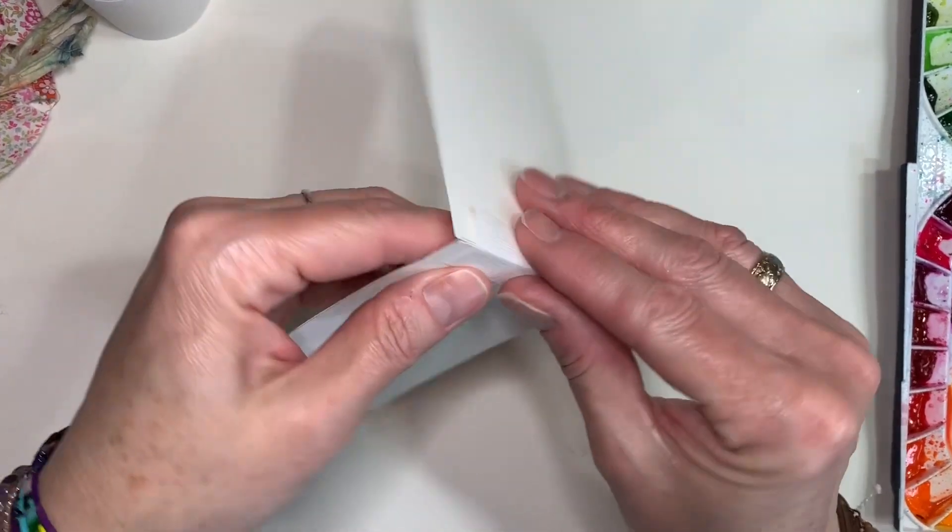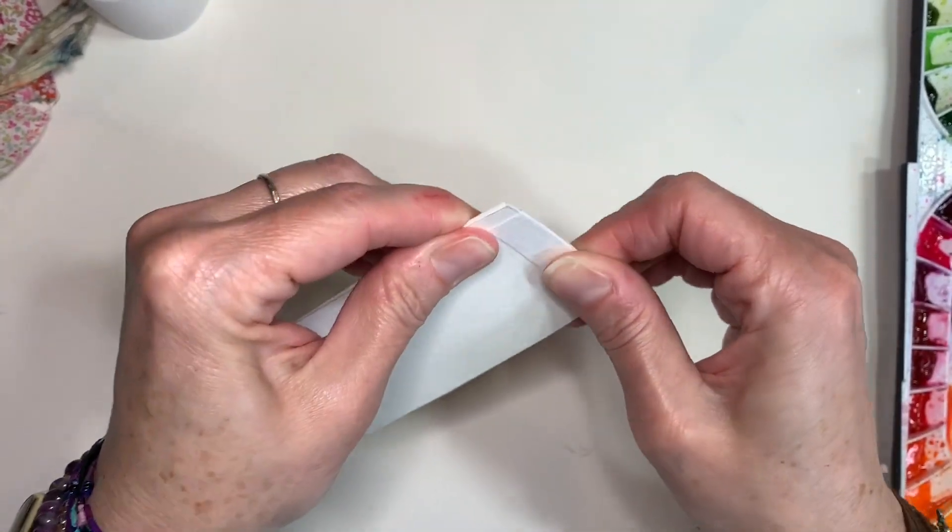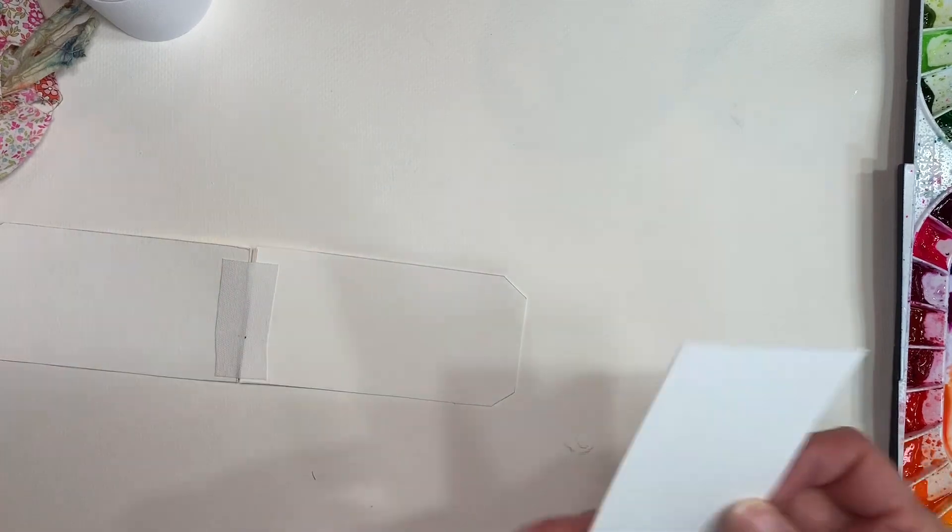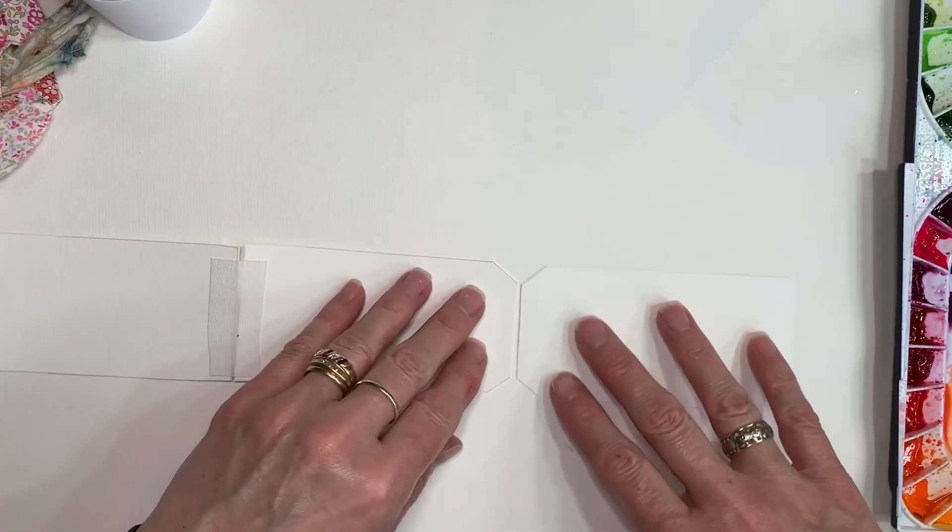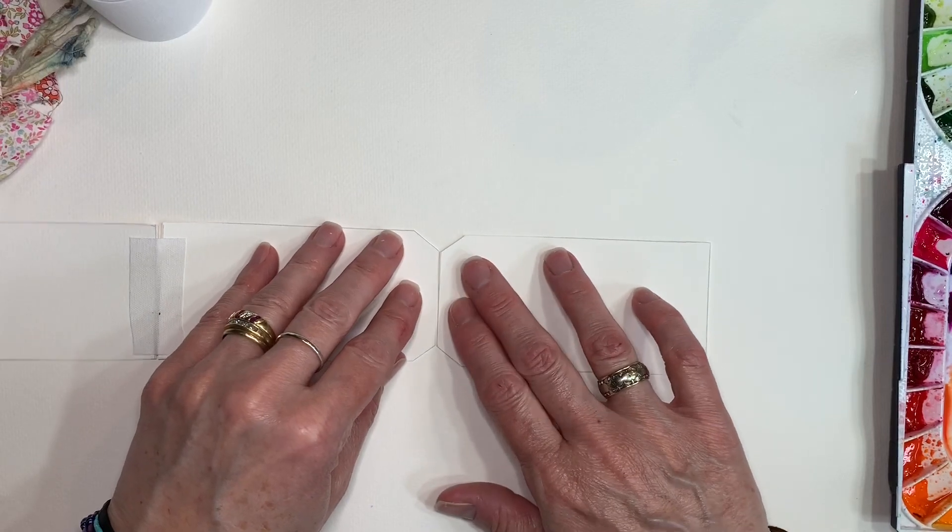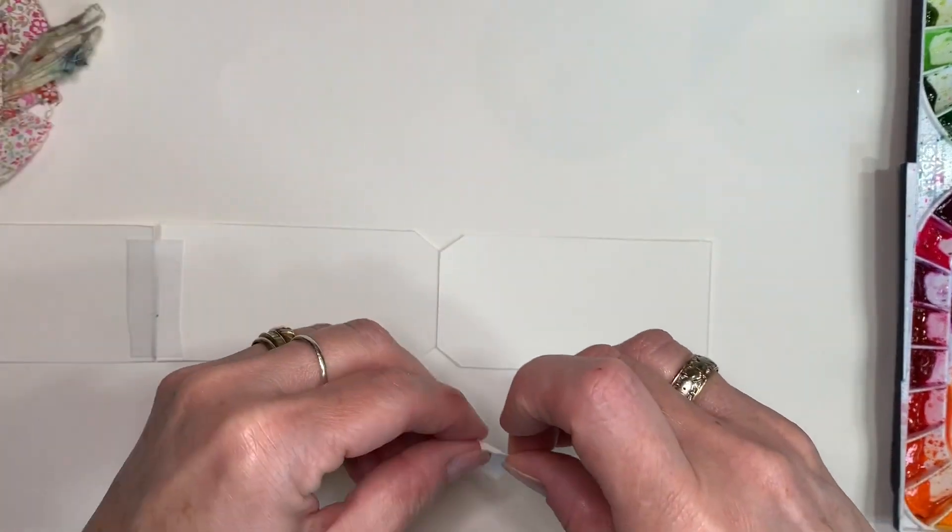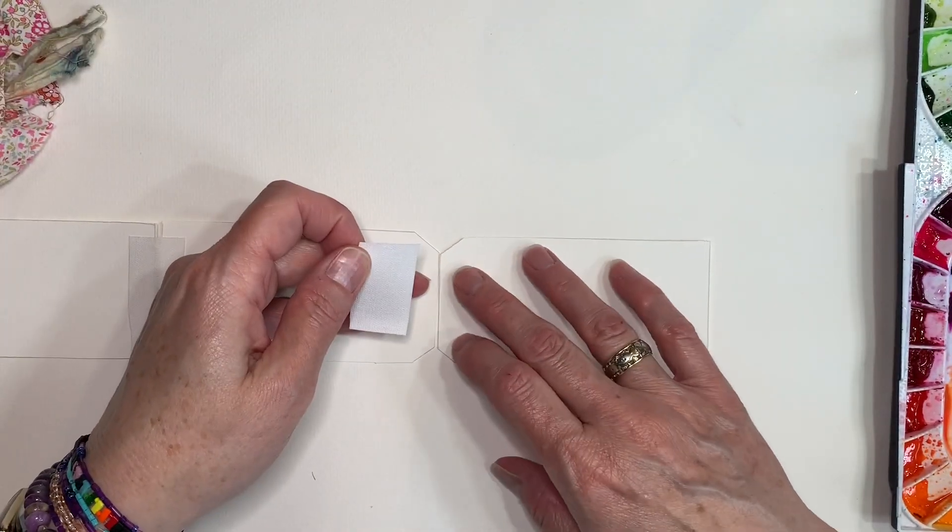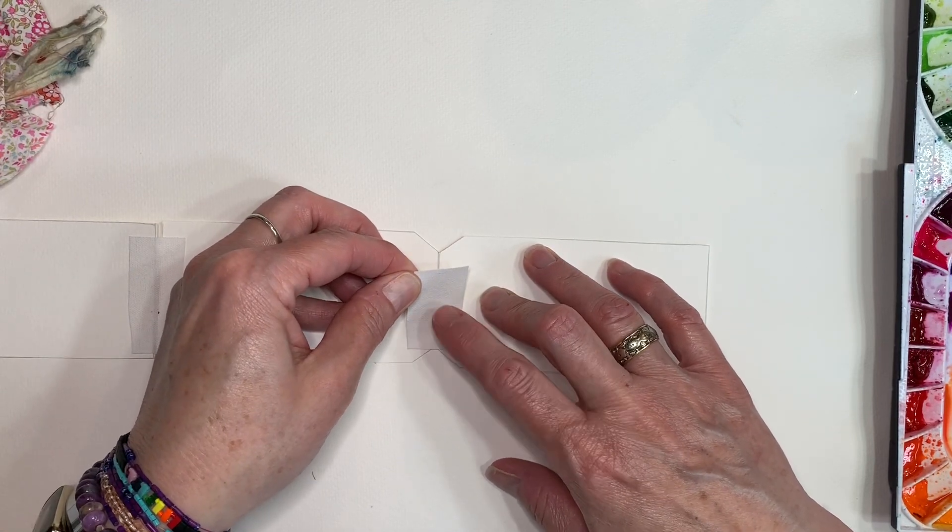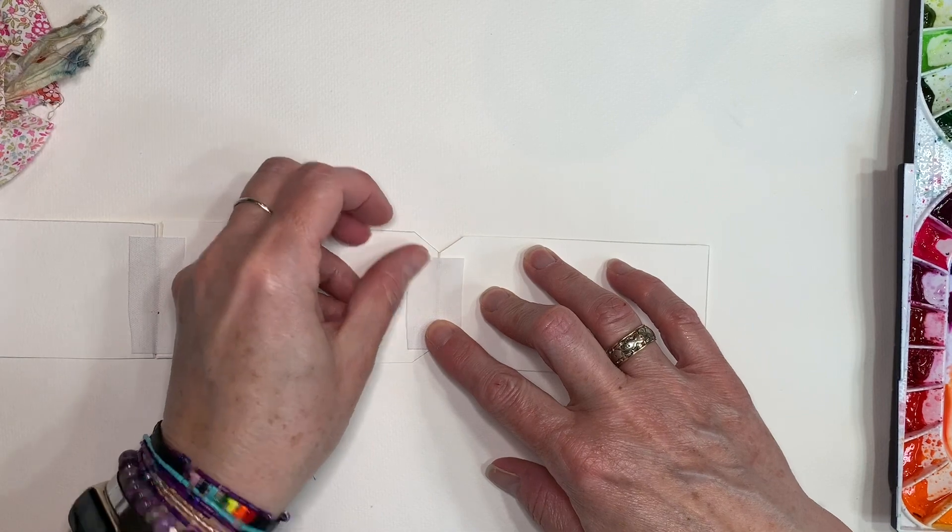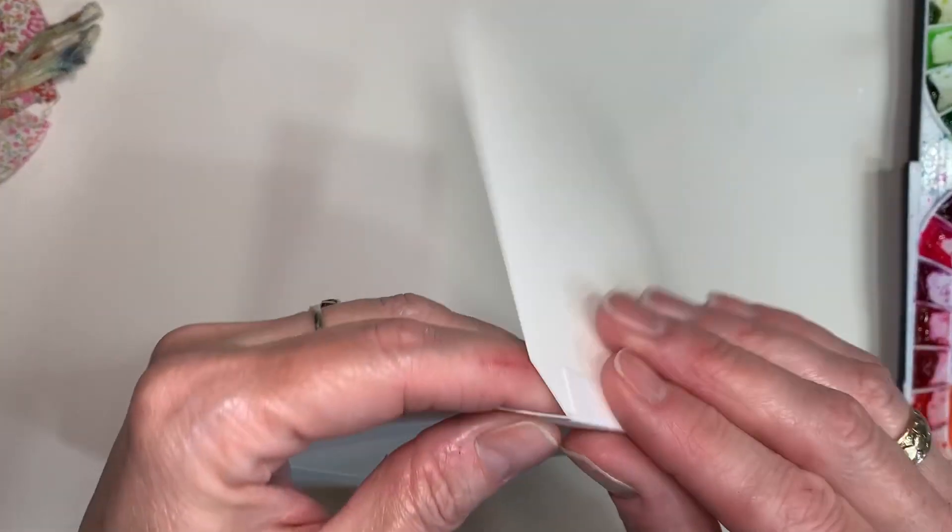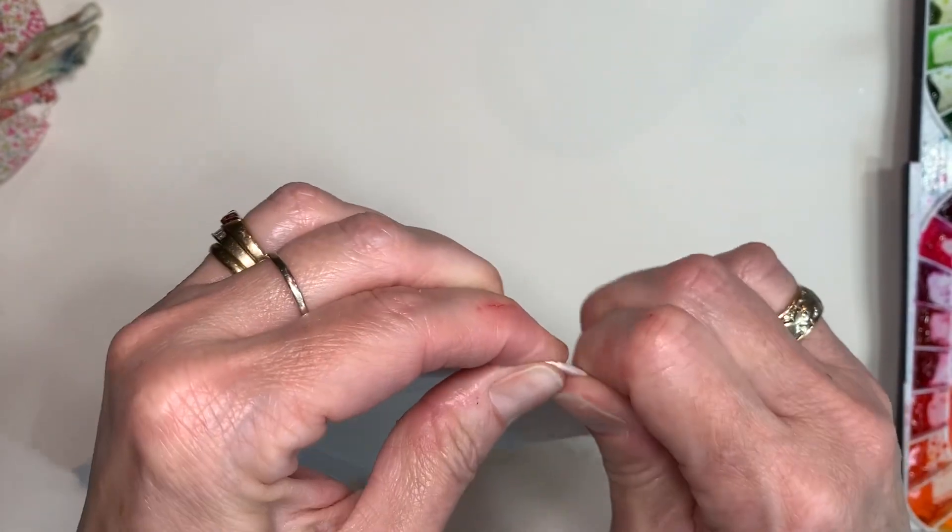So I went long end to long end and taped that together first and once it's taped together, you just want to fold it so that it's a little bit more flexible. And then I took short end to short end and taped that together. And you're going to want to do that with all four tags. I only taped on one side because I had tried it earlier and I taped both sides of the tags and it was way too thick. And then the tag book wouldn't fold together very well.